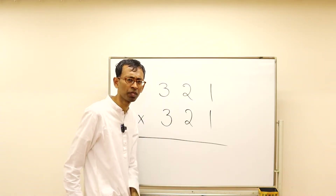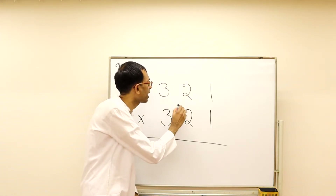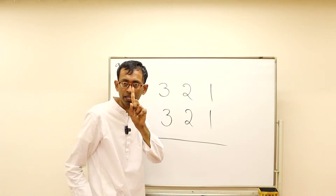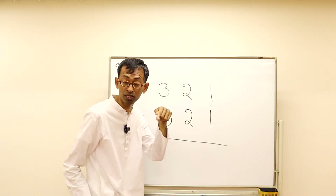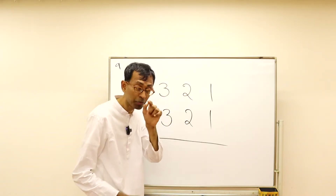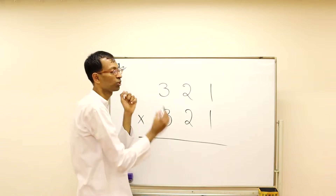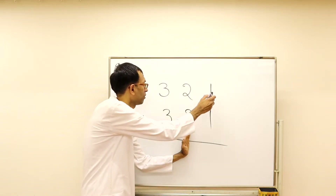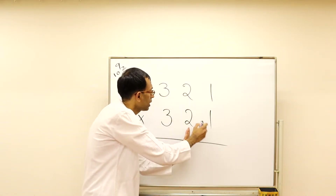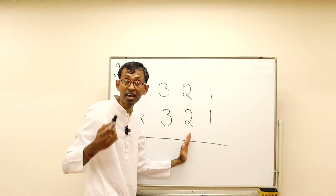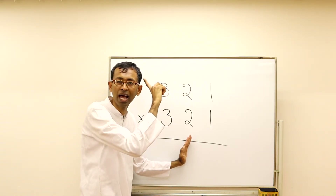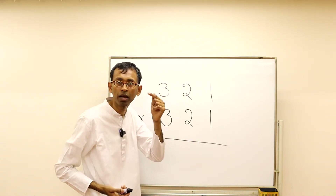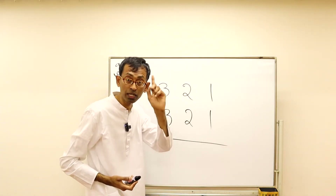Then we have cross multiply and add: six plus six is twelve. The carry of one gets added to nine — nine becomes ten. So the number in mind is one-zero-two. Then the center shifts here: we have three, three, and four — total is ten. One is the carry. One-zero-two becomes one-zero-three, and then there is a zero, so the number in mind is one-zero-three-zero.